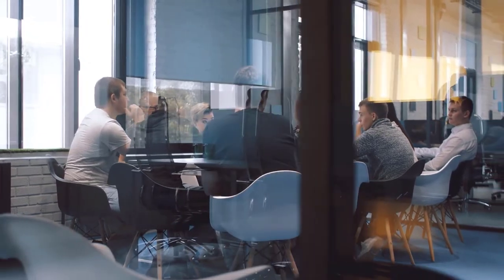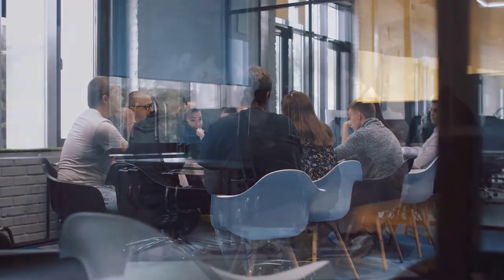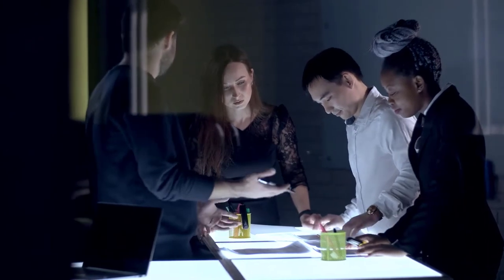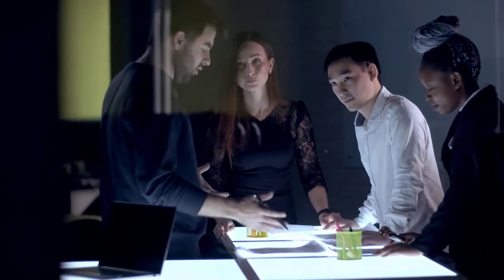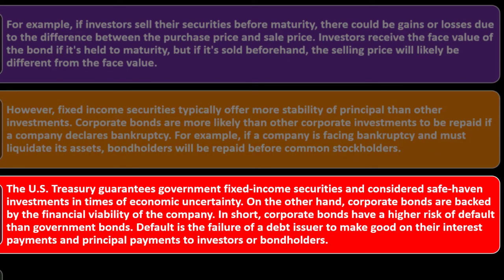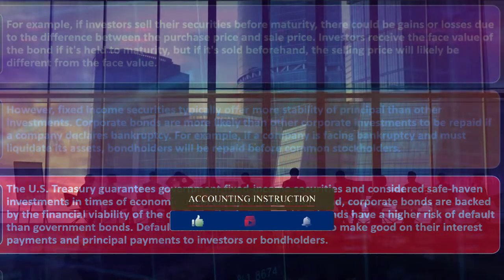Corporate bonds are more likely than other corporate investments to be repaid if a company declares bankruptcy. If a company goes bankrupt, bondholders are typically higher in line than stockholders to be repaid. If a company faces bankruptcy and must liquidate its assets, bondholders will be repaid before common shareholders. The U.S. Treasury guarantees government fixed income securities and considers them safe-haven investments in times of economic uncertainty.